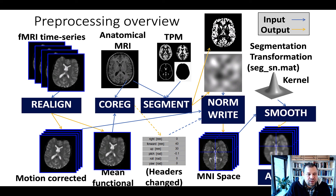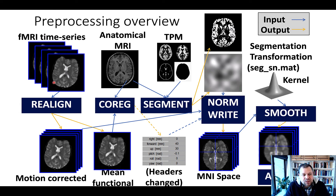Now that we are done with the initial cleanup of the data — namely correcting motion first, which is what we did in the first step, and then making sure that each voxel has the corrected timing, so we did slice timing correction as well — you should have done this in your data at this point.